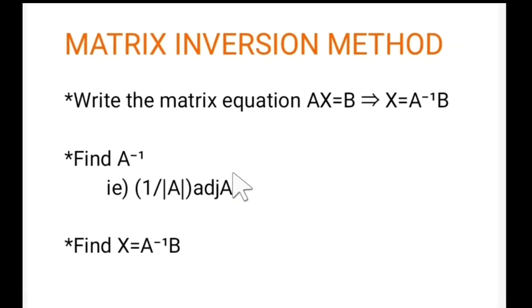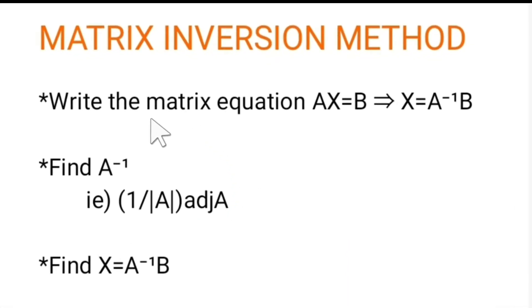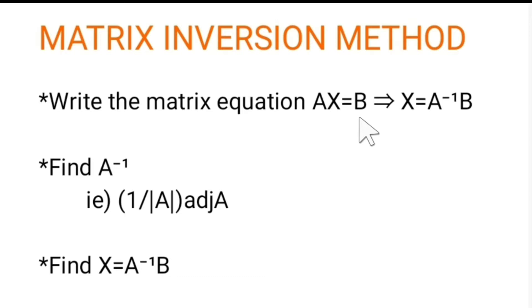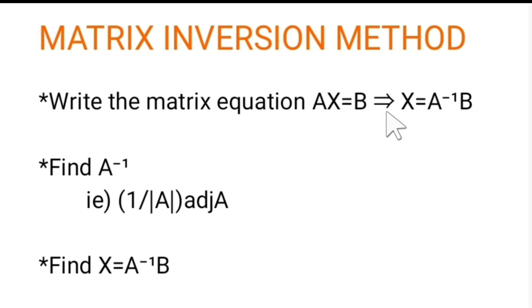First, let us see the procedure for matrix inversion method. First, we have to write the matrix equation Ax equals b. Here, A means the coefficients of all the unknowns, and x represents the set of all unknown elements written in a single column. The matrix b represents the set of all constant terms in the system of linear equations written in a single column. From that, we calculate x by bringing A to the right hand side, so x equals A inverse b.